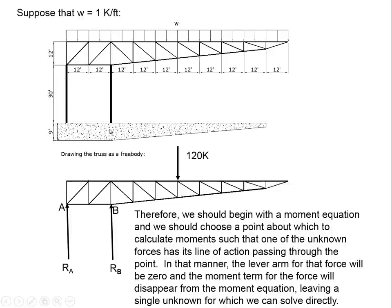We could pick those points up there. We could pick a point somewhere up here, but the key thing is we want to pick a point where either R A or R B has zero lever arm, so that those forces disappear from our equation of equilibrium.